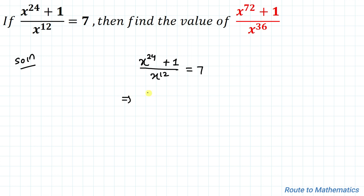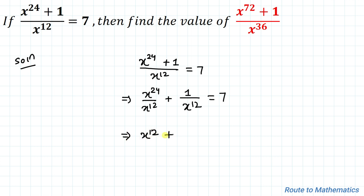In the next step we can write this as x to the power 24 divided by x to the power 12, plus 1 by x to the power 12, equals 7. Here the bases are the same, so the powers get subtracted, giving us x to the power 12 plus 1 by x to the power 12 equals 7.